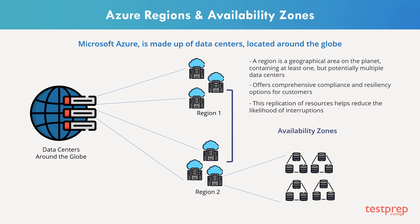So that means if one availability zone goes down, the other continues to work. The availability zones are typically connected with each other through very fast, private fiber optic networks. Availability zones allow customers to run mission-critical applications with high availability and low latency.